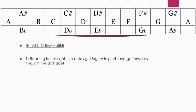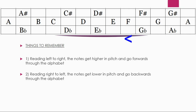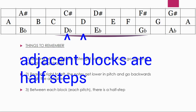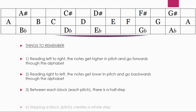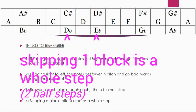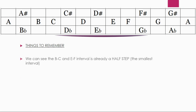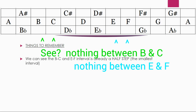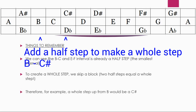You read the graph from left to right, just like on a piano keyboard. Notes get higher in pitch going left to right, forwards through the alphabet. Going right to left, notes get lower and go backwards through the alphabet. Between each block — A to A sharp, A sharp to B, B to C — that's just a half step. If you skip a block, you create a whole step. Two half steps equal a whole step. So B to C is a half step, but B to C sharp is a whole step.